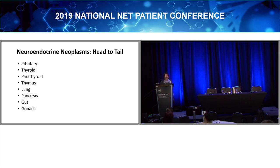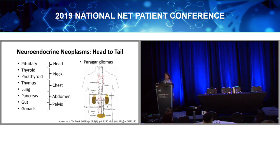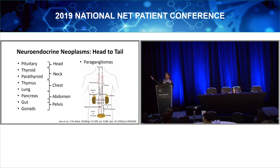Rarely we'll see primary neuroendocrine tumors of the gonads. And then there's another whole family of cells called paraganglia. As shown in the picture, these cells live all the way up and down beside the aorta, running from the base of the brain all the way to the back of the bottom of our spine. These also give rise to neuroendocrine tumors. Interestingly, they're a little bit different because they're what we call paraneurons — they're not epithelial cells but more regulatory cells.